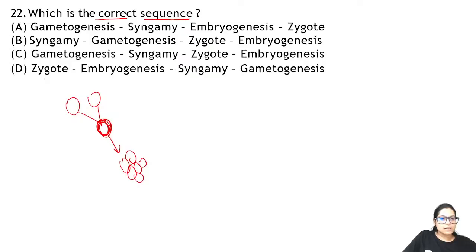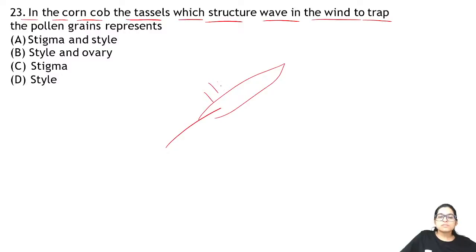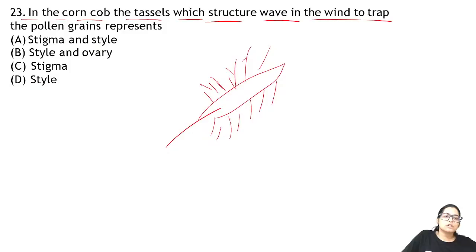Question 23: in the corn cob, the tassel-like structures wave in the wind to trap the pollen grain. In corn, those hanging tassels trap pollen. If you have eaten corn on the cob, you would have seen the threads coming out — that is the stigma and style. So the answer for 23 is A.